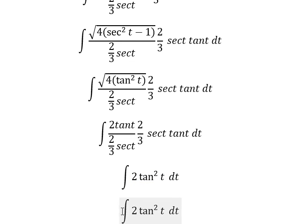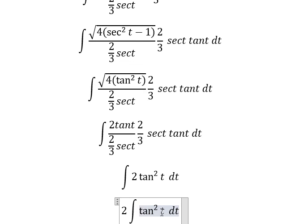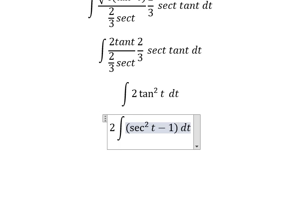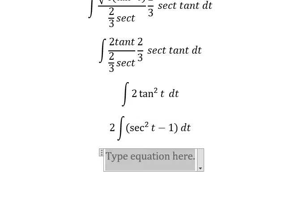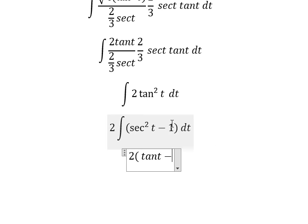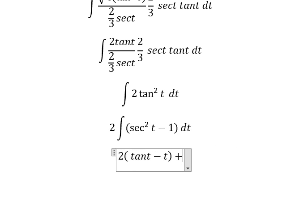We put the 2 outside and change tangent squared t to secant squared t minus 1. Now we can get the final answer: the integral of secant squared t gives tangent t, and the integral of 1 gives t, plus constant C.